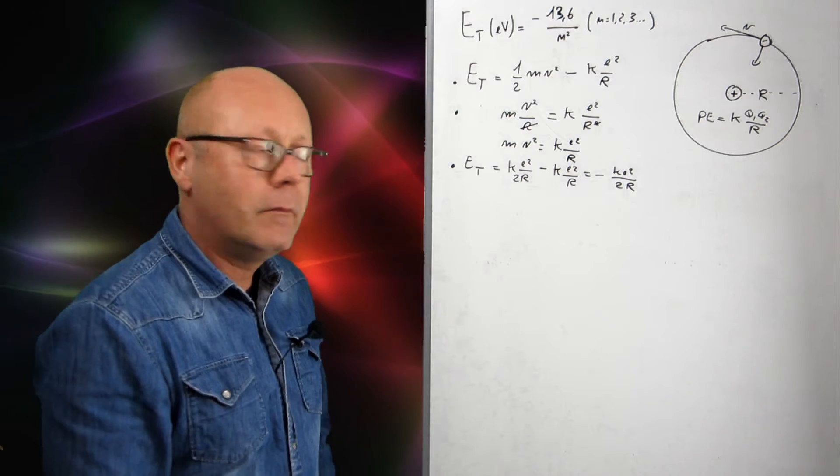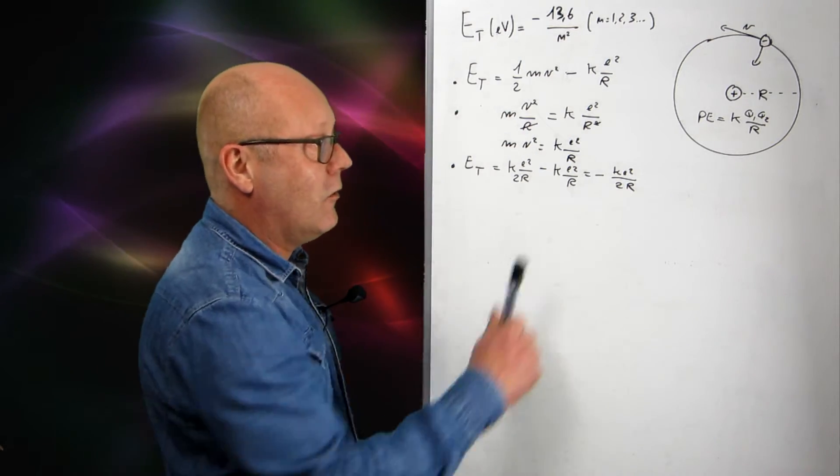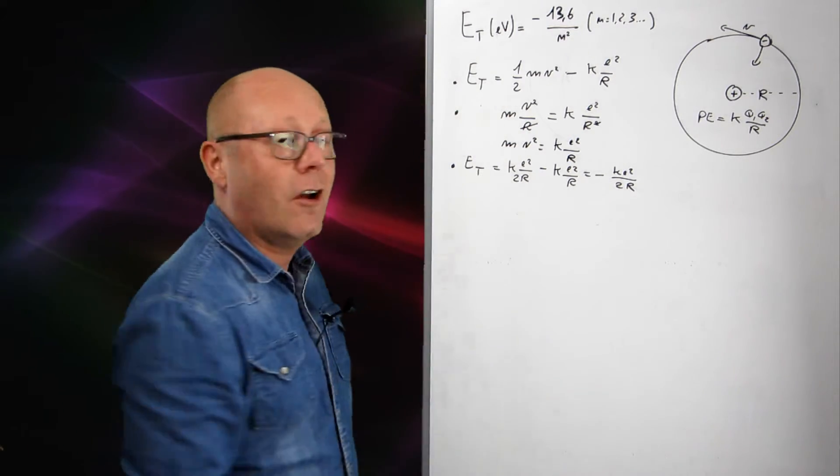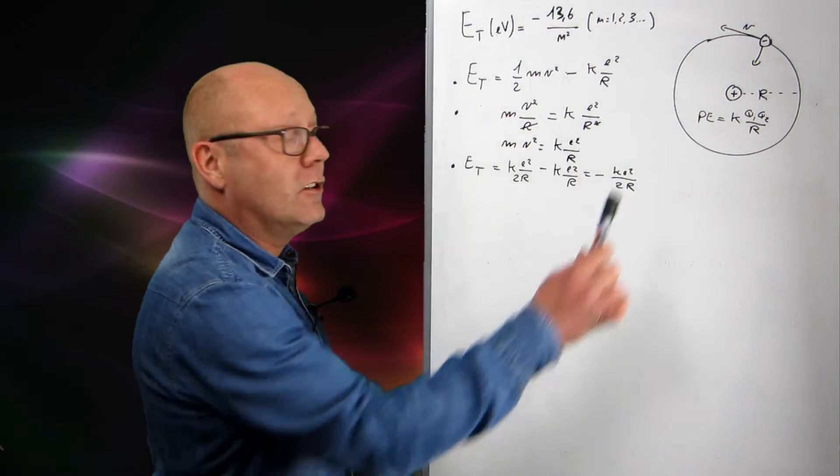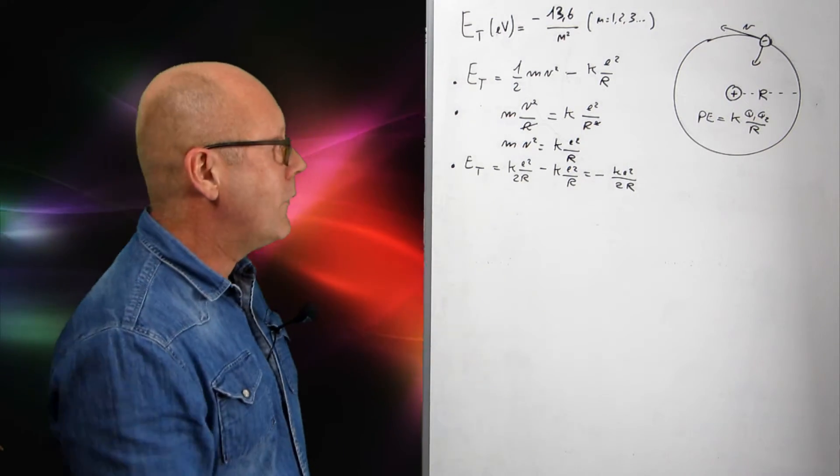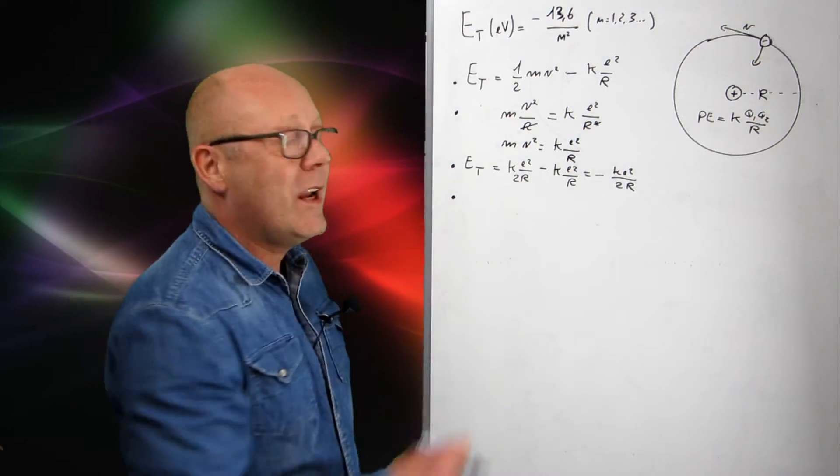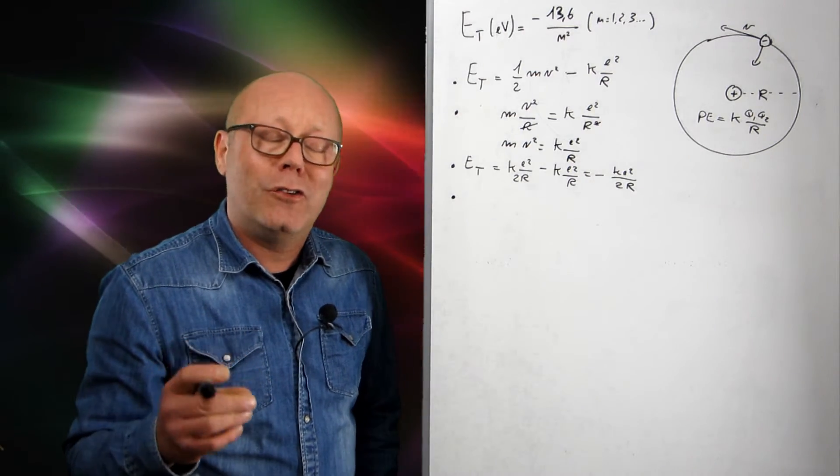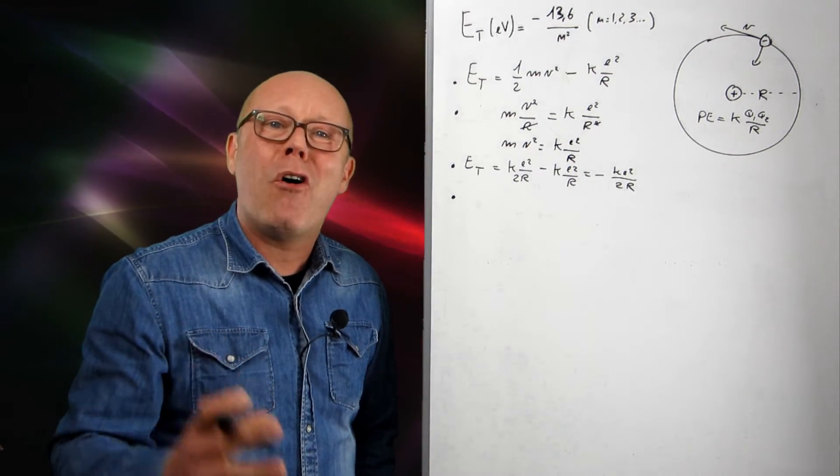Hmm, that's pretty nice. Neat. So I see that my total energy now, the energy of my atom, depends on the radius only. The rest are constant. Okay. Now, we arrive to where Bohr was a genius.